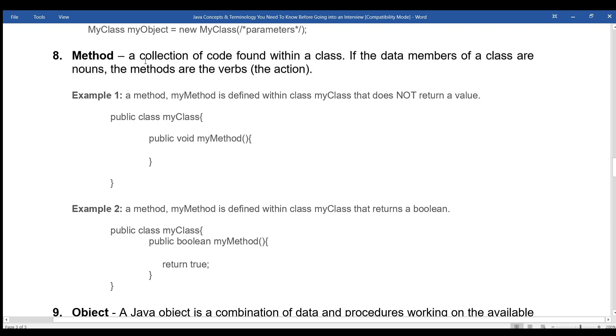Method: A collection of code found within a class. If the data members of a class are nouns, the methods are the verbs, the action. Example 1: a method myMethod is defined within class MyClass that does not return a value: public class MyClass, public void myMethod. Example 2: a method myMethod is defined within class MyClass that returns a boolean: public class MyClass, public boolean myMethod, return true.